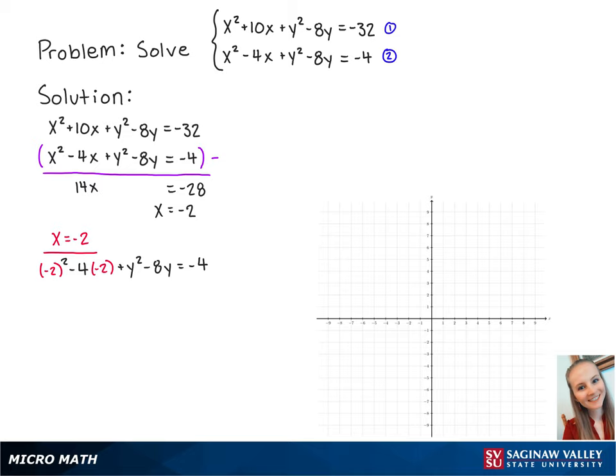To solve for y, we want to get the right side equal to 0. So we're going to add 4 to both sides so that we get y squared minus 8y plus 16 equals 0. Now we can factor the left side to be y minus 4 squared equals 0.